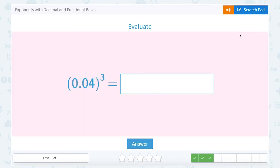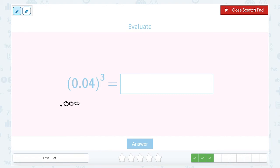When you have a decimal 0.04 raised to the third power, I would recommend using your calculator. 0.04 raised to the third power is going to give us a decimal answer that looks like this.